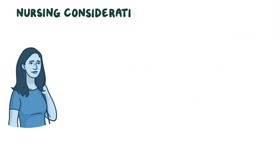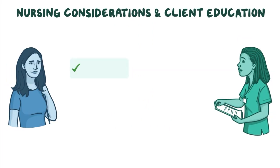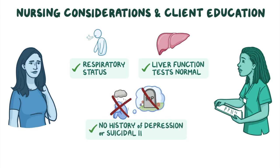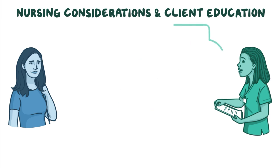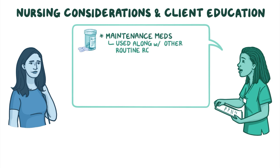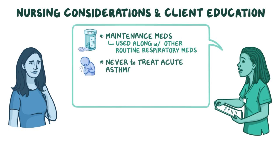Before administering a leukotriene modifier, assess your client's respiratory status and confirm that liver function tests are normal. Also, be sure the client does not have a history of depression or suicidal ideation. Teach your client that leukotriene modifiers are maintenance medications to be used along with their other routine respiratory medications, and remind them that leukotriene modifiers should never be used to treat an acute asthma attack.